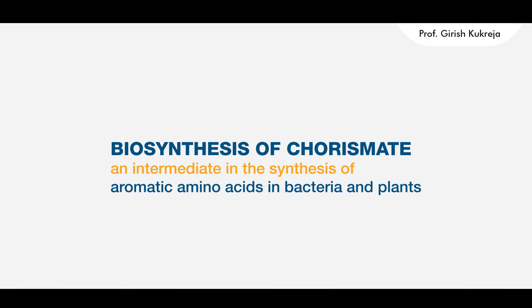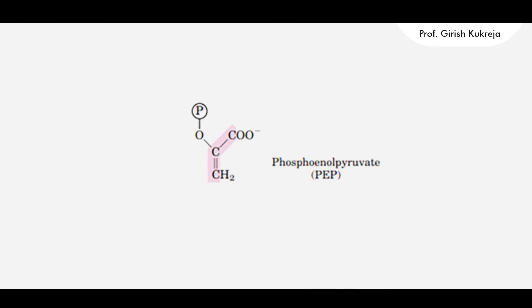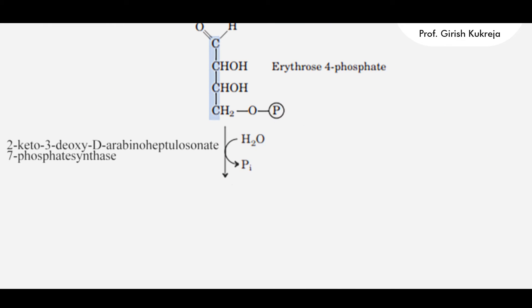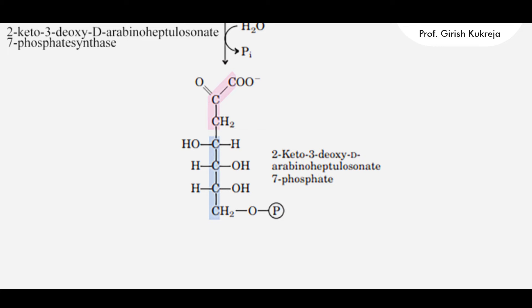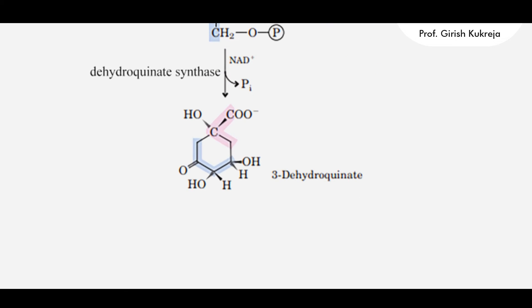All the carbon atoms in the biosynthesis of chorismate, which is an intermediate in the synthesis of aromatic amino acids in bacteria and plants, are derived either from erythrose-4-phosphate or phosphoenolpyruvate. In the first step, PEP combines with erythrose-4-phosphate in a reaction catalyzed by 2-keto-3-deoxy-D-arabino-heptulosonate-7-phosphate synthase, forming 2-keto-3-deoxy-D-arabino-heptulosonate-7-phosphate. This is then acted upon by dehydroquinate synthase, which catalyzes cyclization to form 3-dehydroquinate.